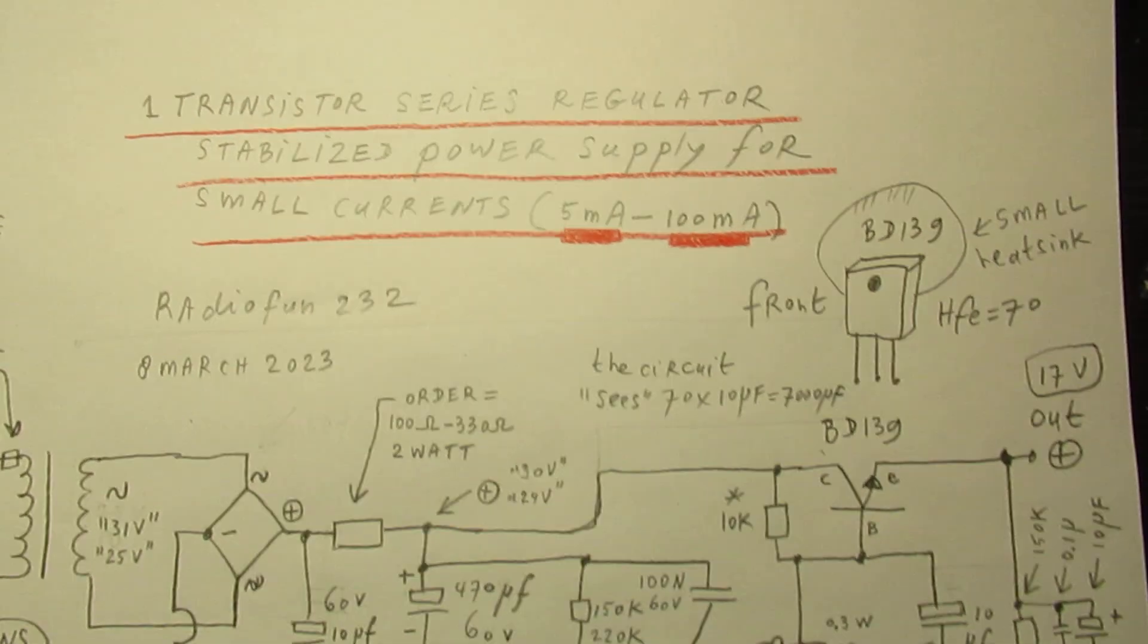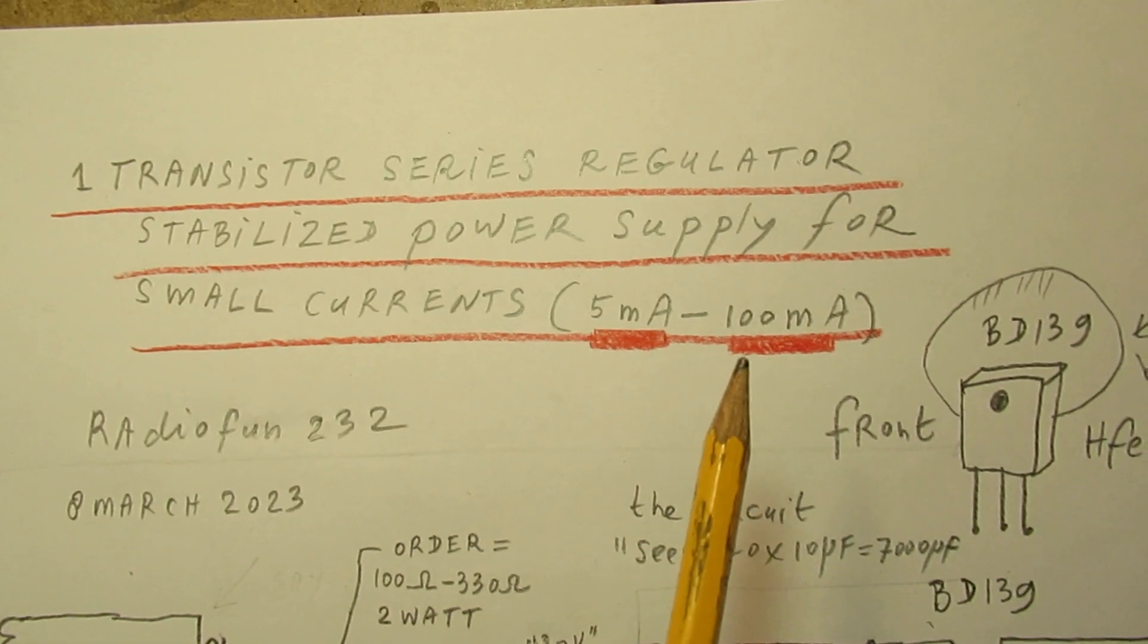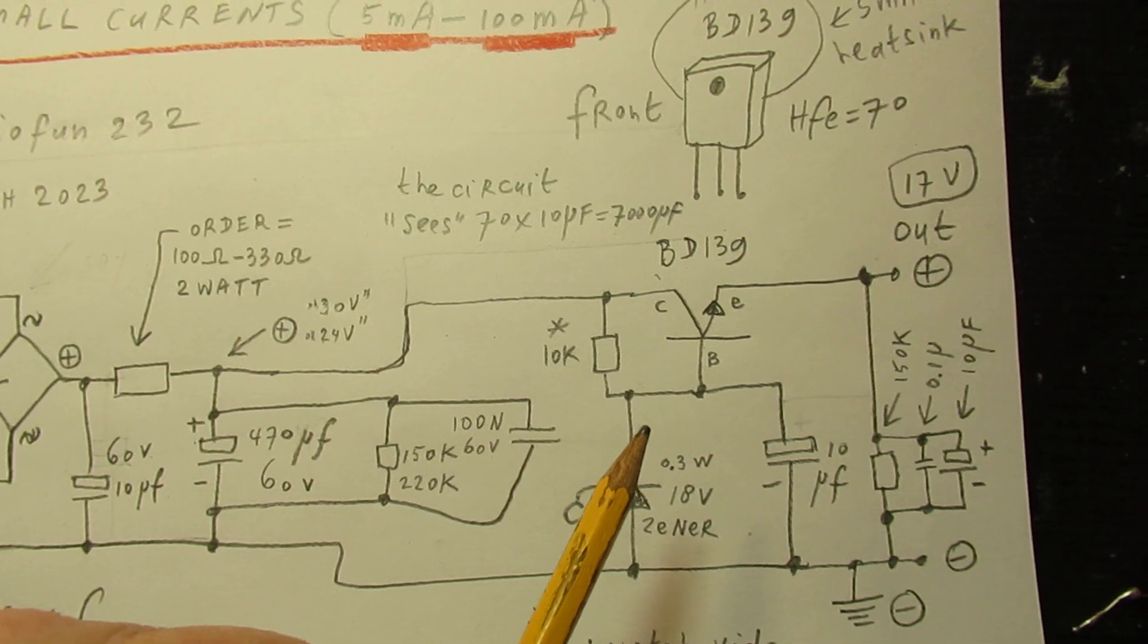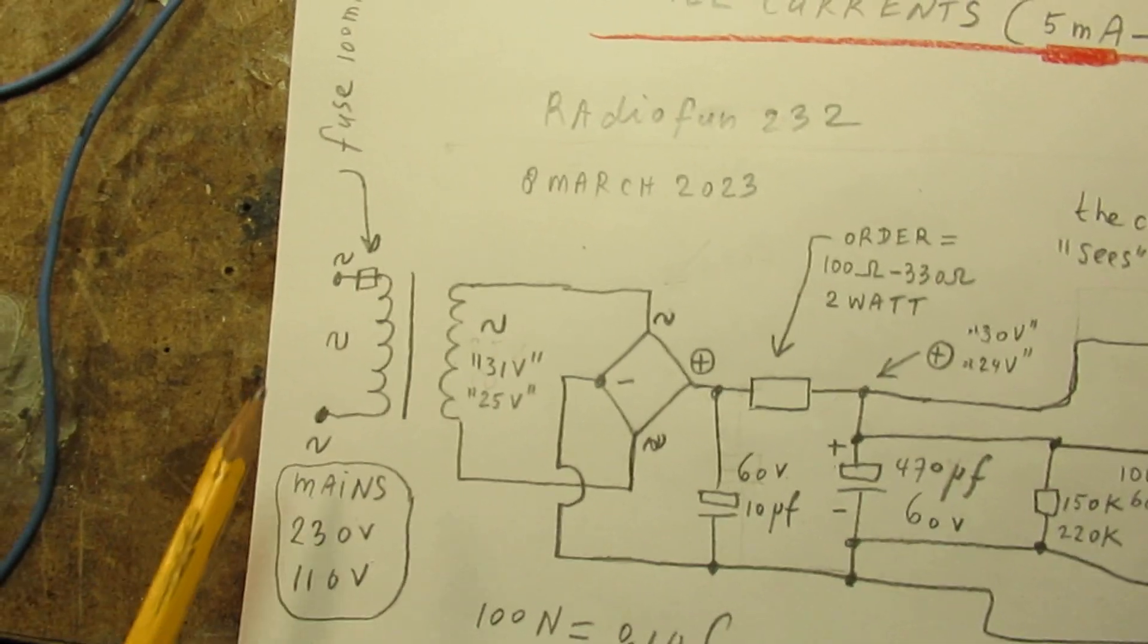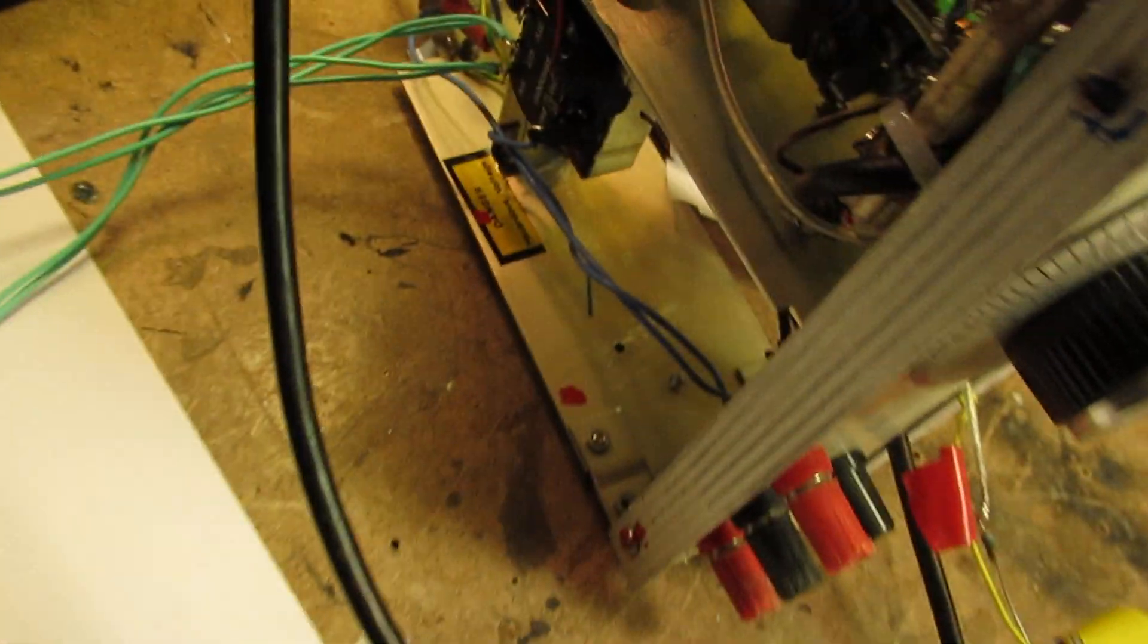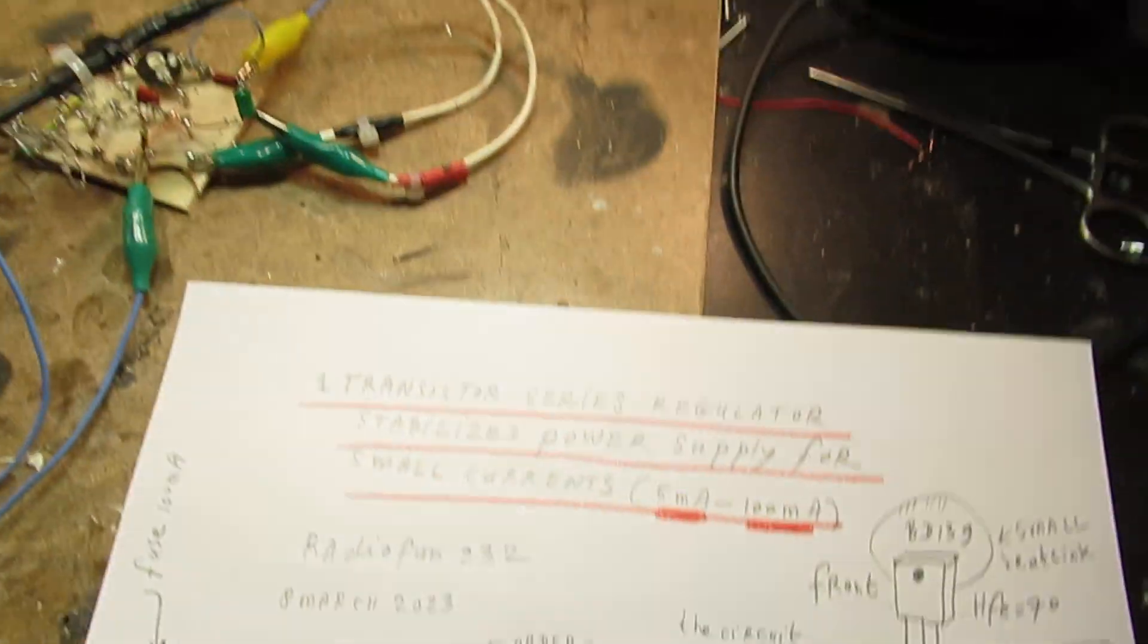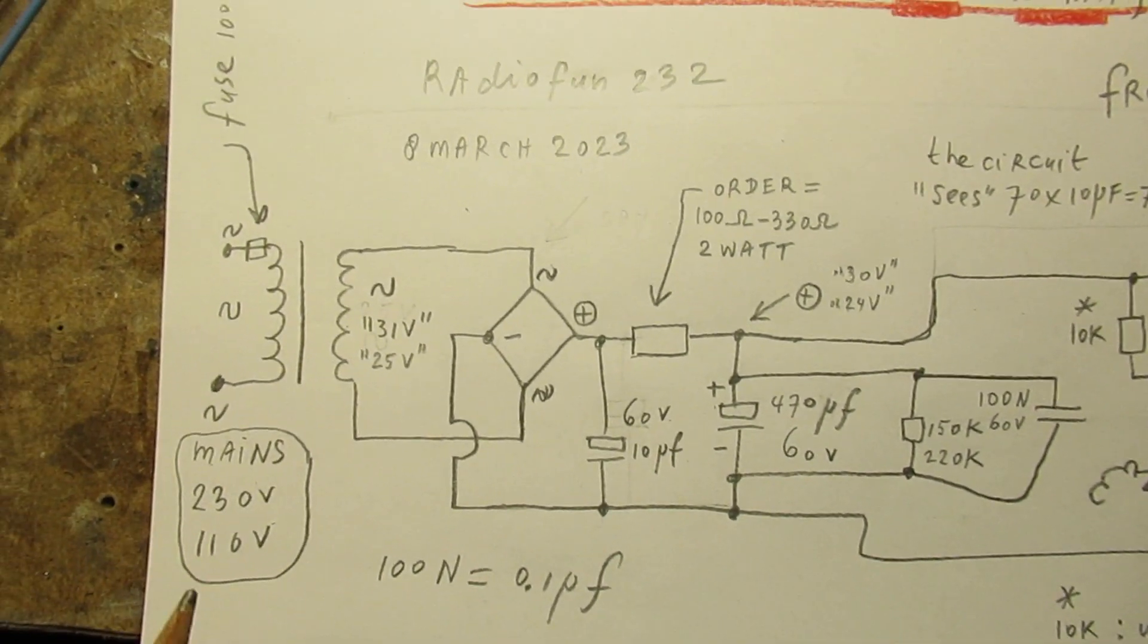But this circuit only regards tiny currents, say 5 milliampere up to 100 milliampere. In that case the transistor will never get very hot. Of course there is always the question of the voltage drop. Here is the input transformer. In this transformer, officially it was indicated for 31 volts AC, but when I measured it was somewhat lower. In fact it doesn't matter much. It's all about the principles.